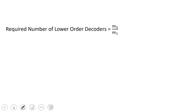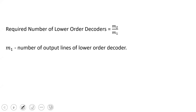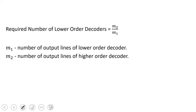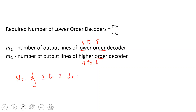The general formula is: the number of lower-order decoders required is equal to M2 divided by M1. Here, M1 is the number of output lines of the lower-order decoder, and M2 is the number of output lines of the higher-order decoder. For a 4-to-16 decoder using 3-to-8 decoders, M1 is 8, M2 is 16, so 16 divided by 8 equals 2 decoders required.